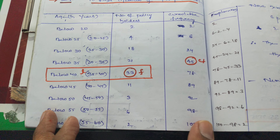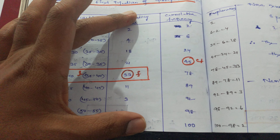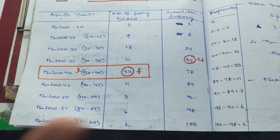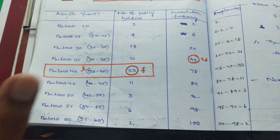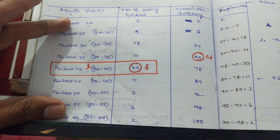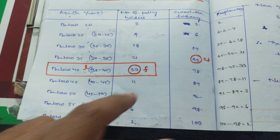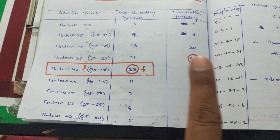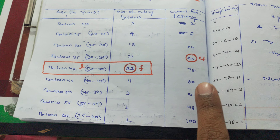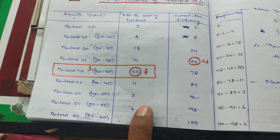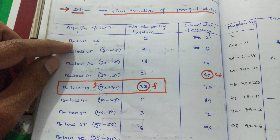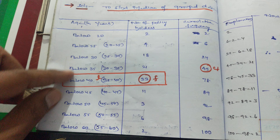Since cumulative frequency is given in the question, we need to find out how to get the frequency from the cumulative frequency. In this type of sum, you have to calculate how you can take frequencies from cumulative frequencies. Now first, write down the data — below 20, below 25, below 30 — as usual from the question.